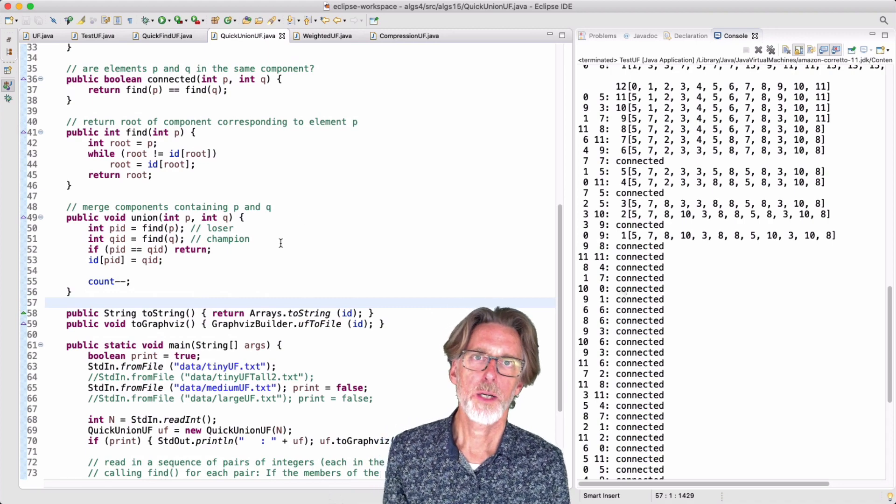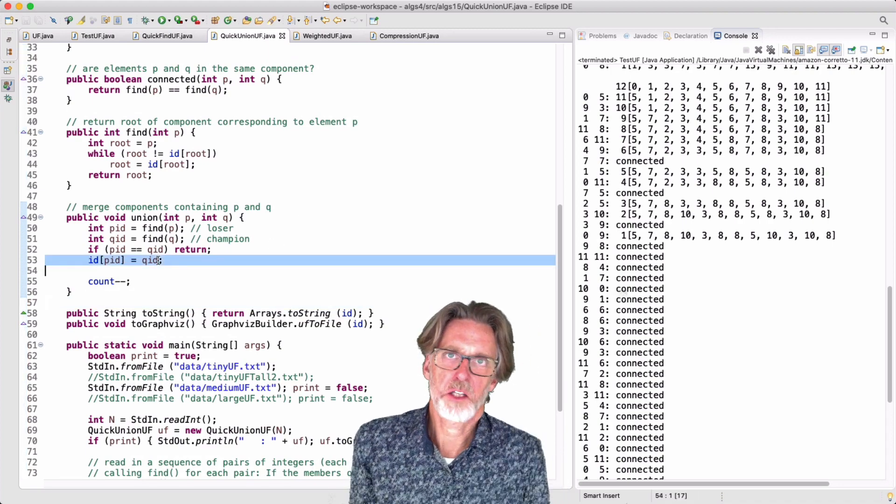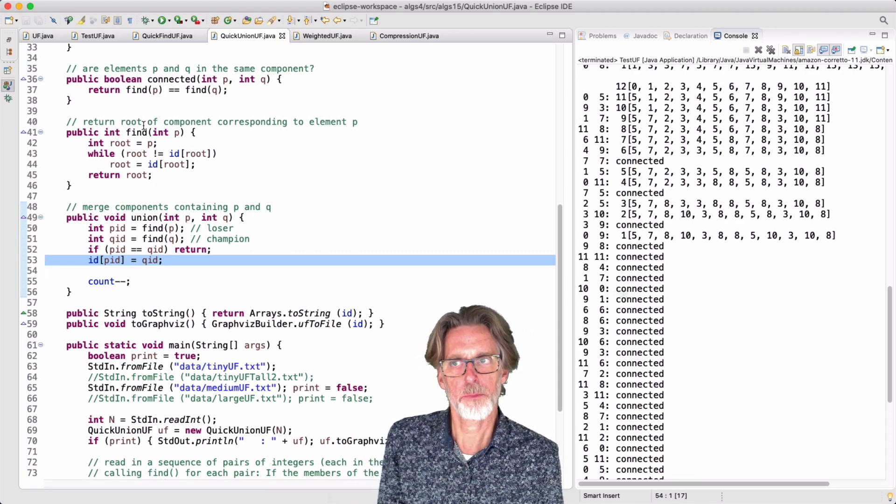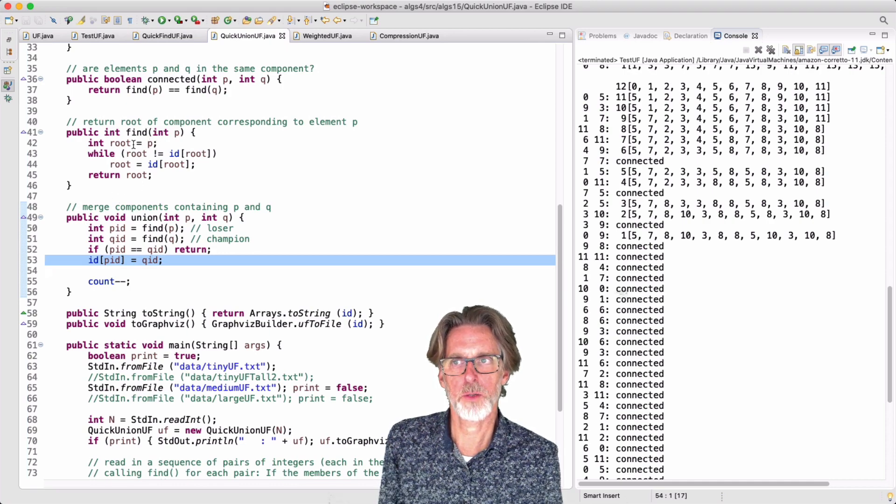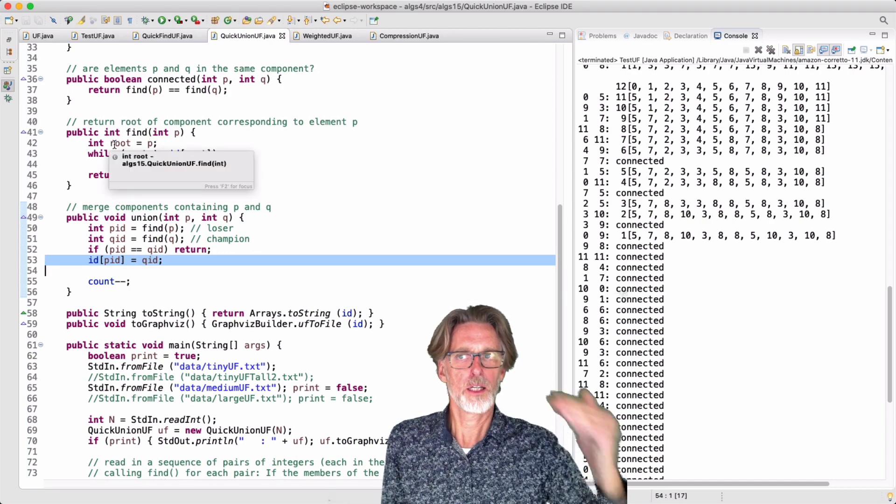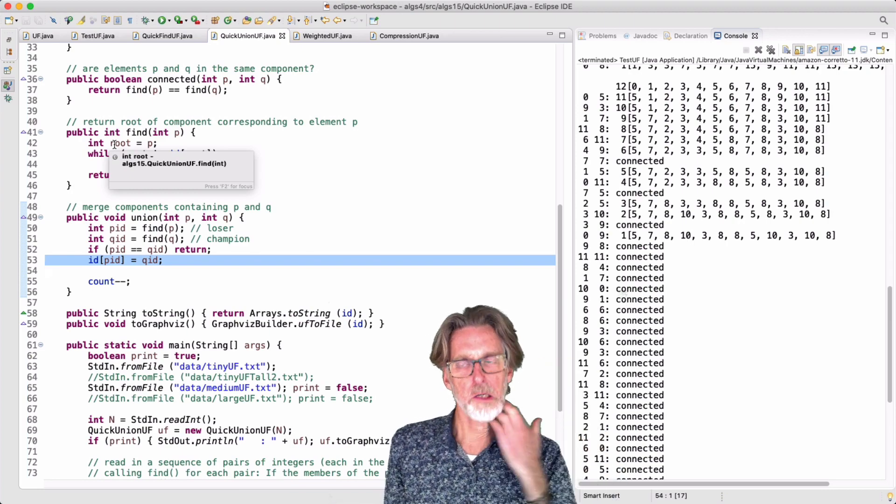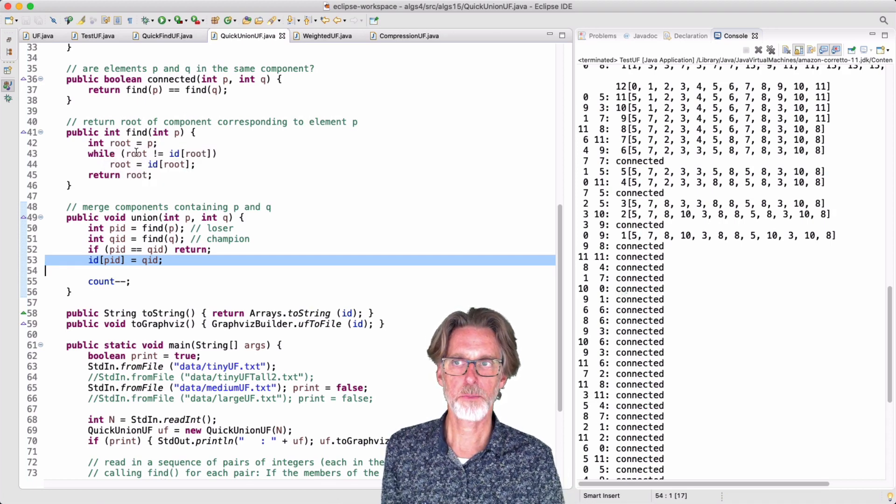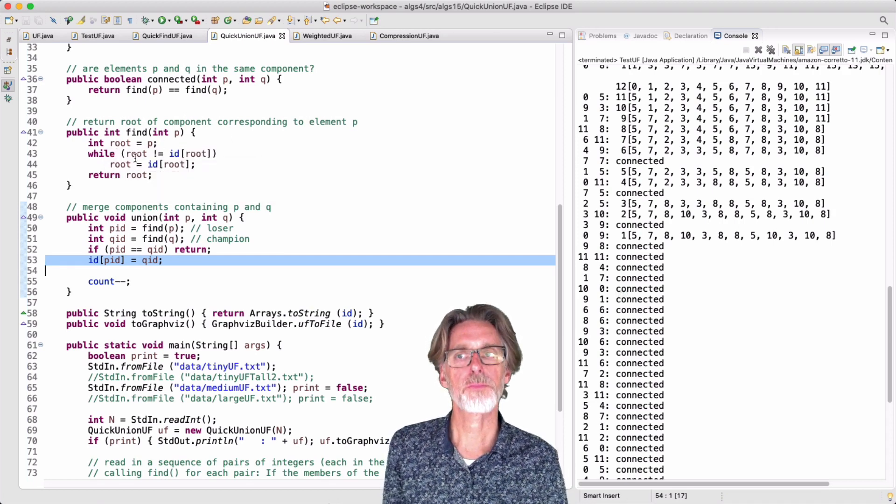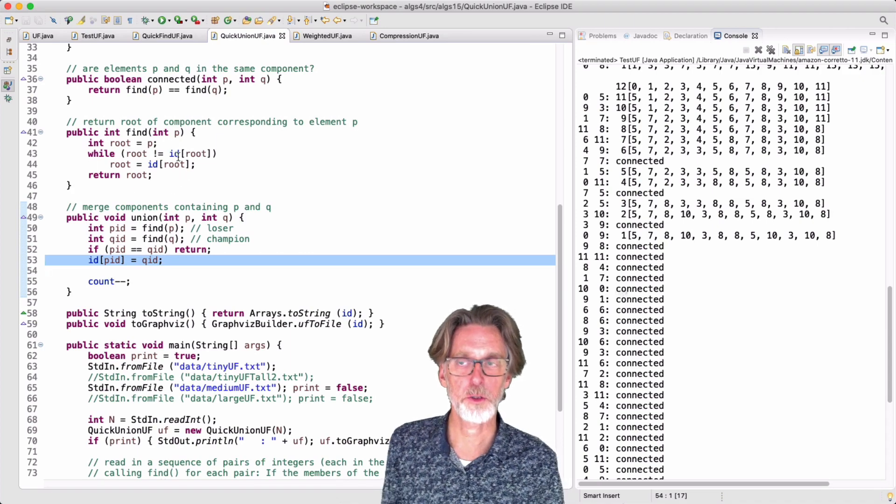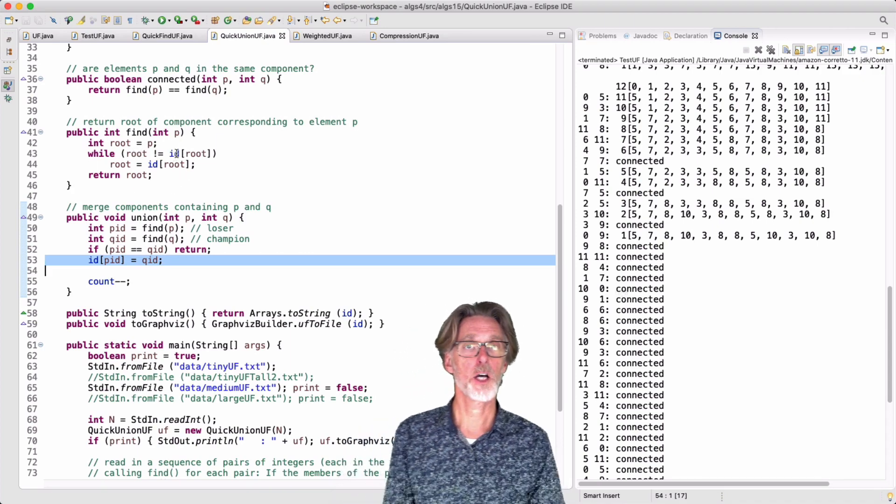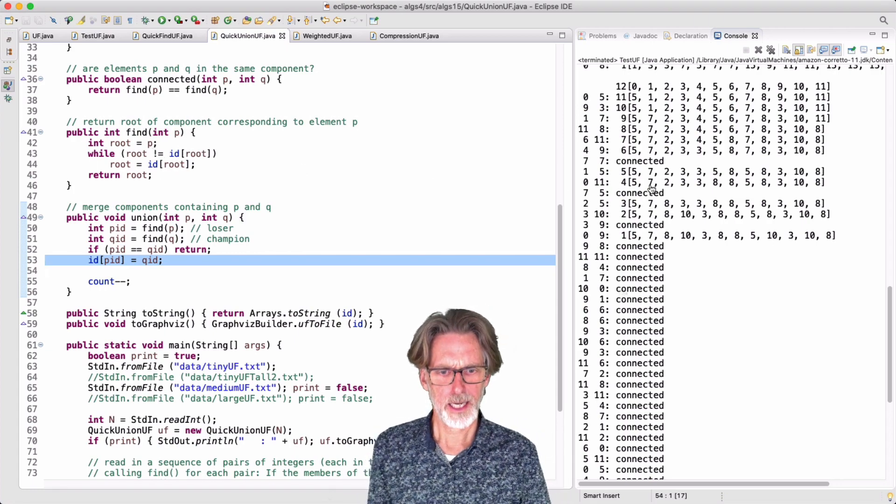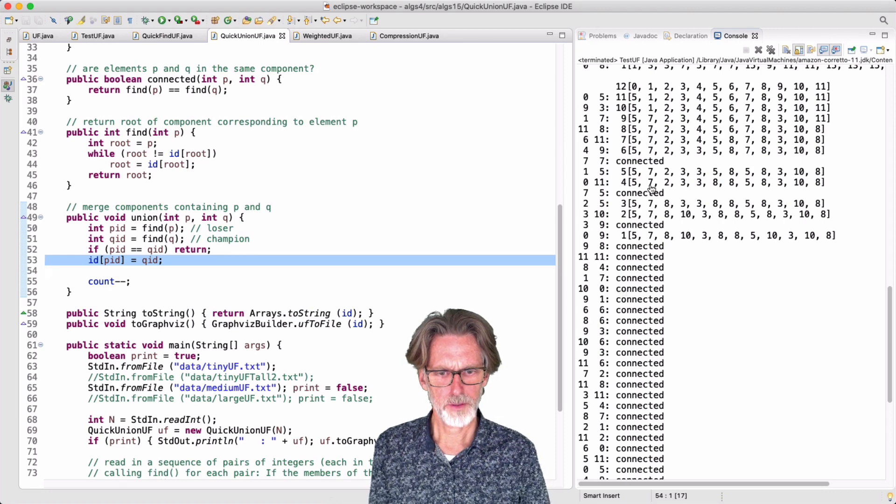For coding quick union, we simplify the union operation. We got rid of the loop. We have to complicate, though, the find operation. And it's important to think about what this is doing. Well, we're starting with some element here I'm calling the root. That's the initial place where we start. And what we're going to do here is update that variable until we actually get up to the root. So while the root is not its own ID, we're going to update the root.